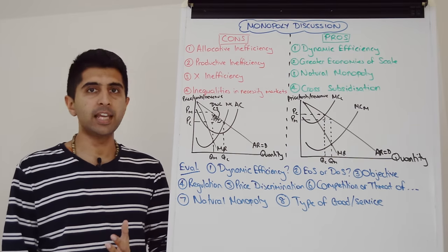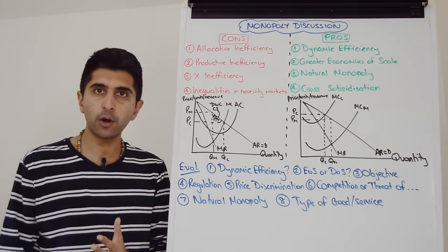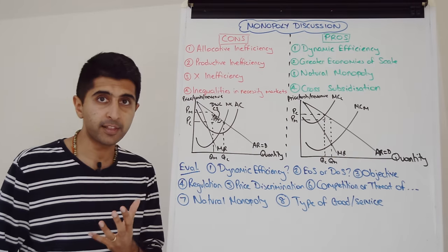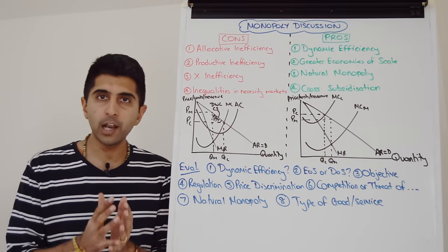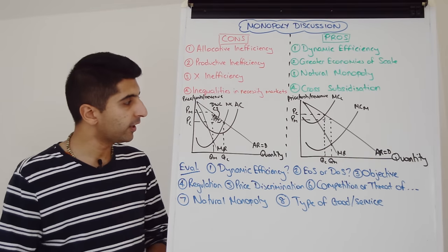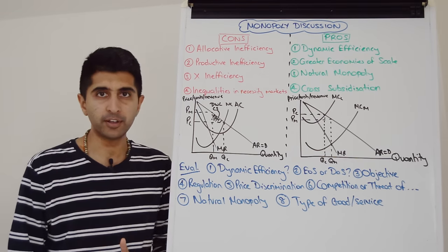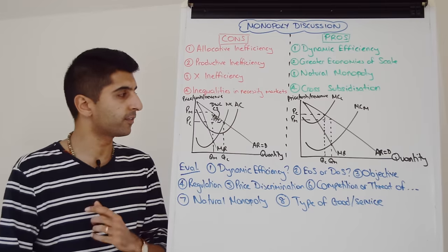Monopolies are also productively inefficient. They voluntarily forgo economies of scale. They don't minimize their costs by operating on the lowest part of their average cost curve. So, one way to look at it is they're to the left of the minimum point, voluntarily forgoing economies of scale.